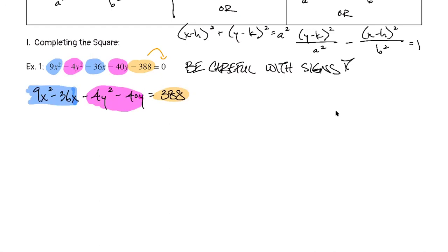Every time you do a question involving a hyperbola or a minus sign, be so, so careful with the signs. Here's where we need to be careful: for the x terms, we factor out 9, giving x² − 4x. But for the y terms in pink, we're not going to factor out 4 — we're going to factor out negative 4.